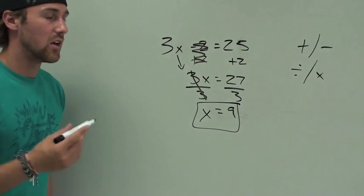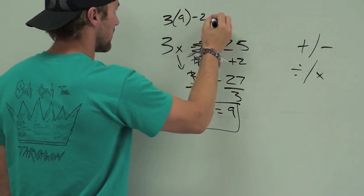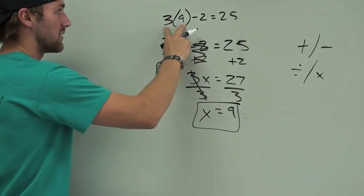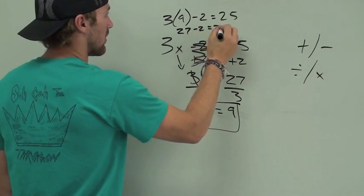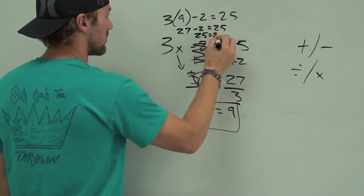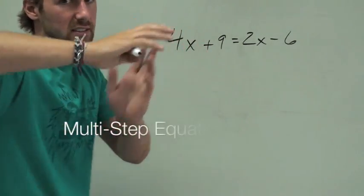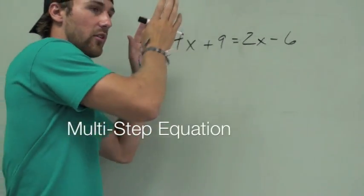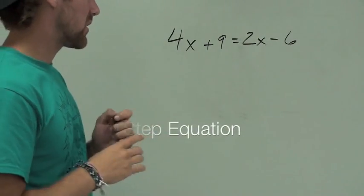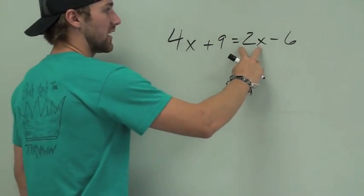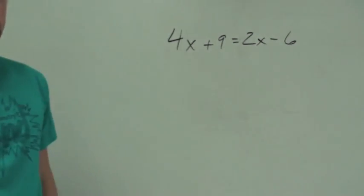x equals 9. If we want to check, we can plug it back in. 3 times 9 minus 2 equals 25. 3 times 9 is 27. 27 minus 2 is 25. 25 equals 25. Wonderful. This is our goal — to get all the stuff with x's on one side, all the regular numbers on the other side. The way I like to do it, because I like to keep things positive, take the smaller number that's with the x and put it over here. That way you're subtracting it and you know it's still going to be a positive number.